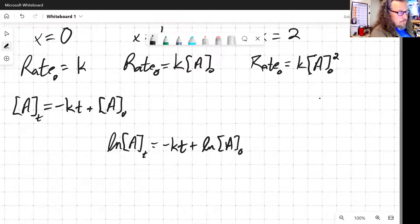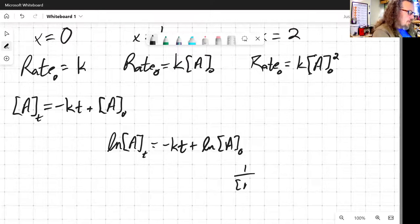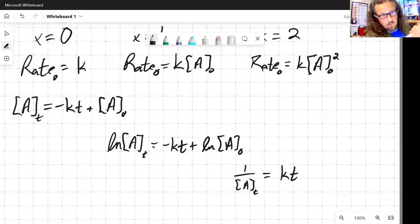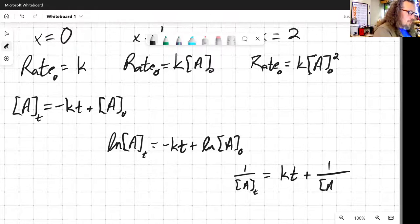And if we do the second order integrated rate law, we find that it's one over the concentration of A at time t equals kt plus one over [A] at time zero.